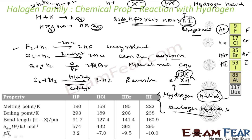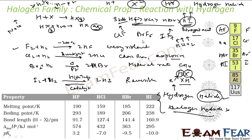The convention: the first element is electropositive and the second is electronegative. For example, IF₇ — we write I first and then F because fluorine is more electronegative. HClO₂ — hydrogen first (electropositive), then chlorine, then oxygen. Similarly ClF, NaCl (chlorine more electronegative), and BrF₅ — the electronegative element comes last, the electropositive element comes first.